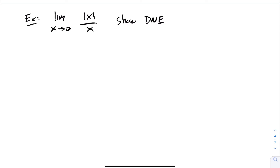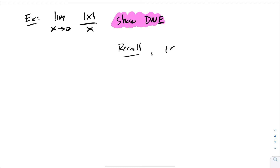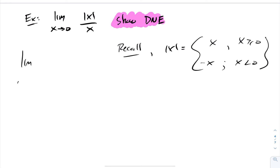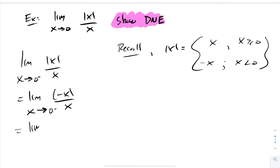In this next question, we want to show that the limit of |x|/x as x goes to 0 does not exist. Recall that |x| equals x if x ≥ 0, and negative x if x < 0. The limit as I approach 0 from the left — we're inputting negative values — so this becomes negative x over x. The x's cancel, giving us negative 1. So the limit from the left is negative 1.